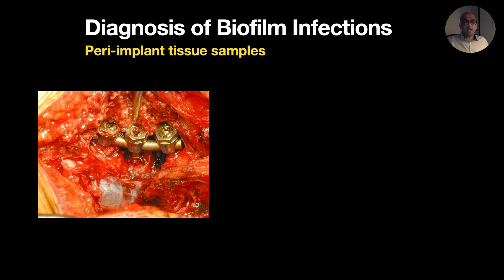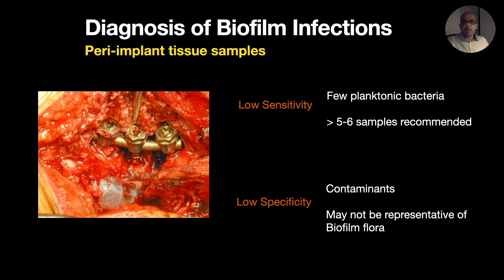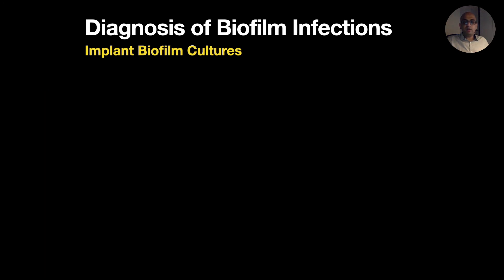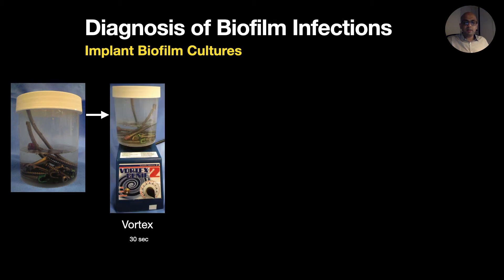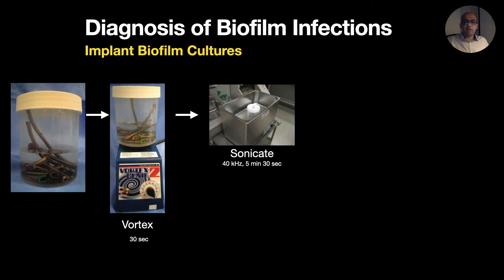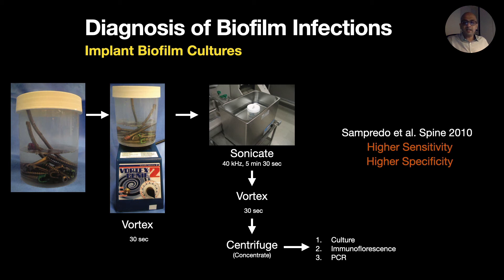The diagnosis of biofilm infections can be challenging. Peri-implant tissue samples for culture have low sensitivity as there are only few planktonic bacteria floating around; hence it is recommended to take 5 to 6 culture samples. They also have low specificity due to wound contaminants. Implant biofilm cultures require a resuscitation step — vortexing and sonication. Implants are collected in Ringer's lactate in a sterile container, then a vortex machine shakes them, an ultrasound bath dislodges bacteria without killing them, and a centrifuge concentrates them. They can then be identified using culture or PCR. A study from Mayo Clinic found this method has higher sensitivity than tissue cultures.